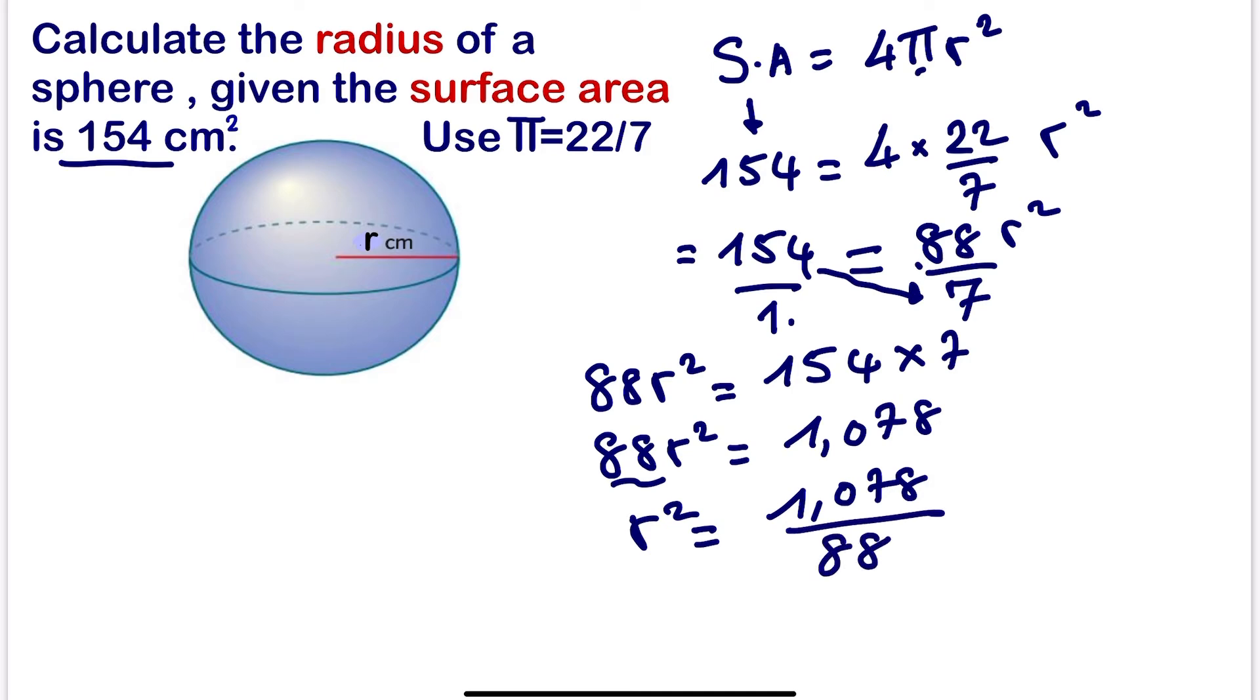Now we can simplify this. We can use 22. So if we divide here by 22 and here also by 22, we are going to have 49 over 4. So this implies r² is equal to 49/4.